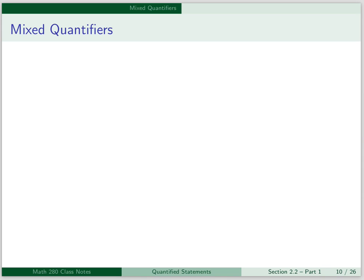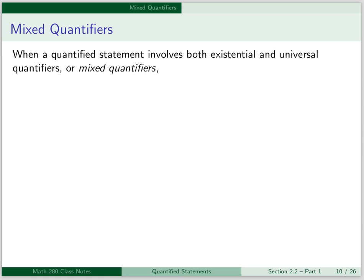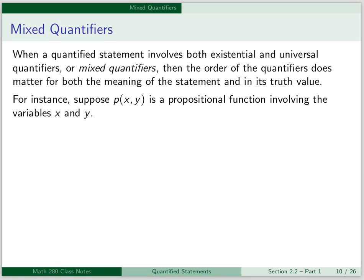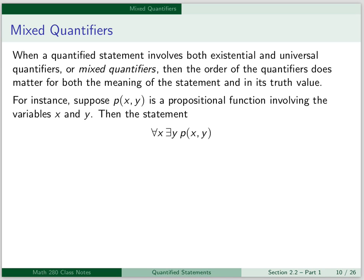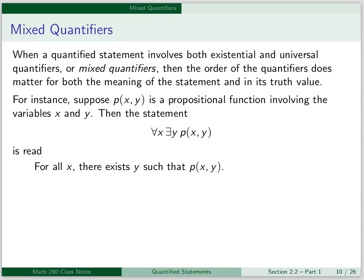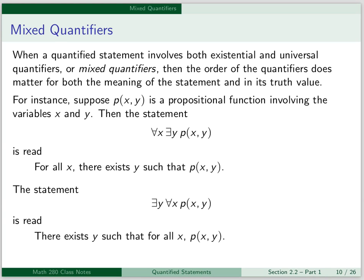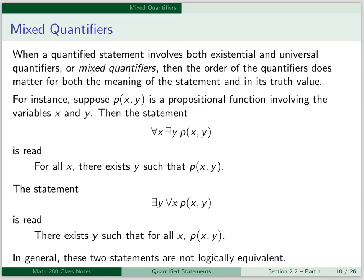Next, we want to talk about mixed quantifiers. When a quantified statement involves both existential and universal quantifiers — mixed quantifiers — then the order of the quantifiers does matter for both the meaning of the statement and its truth value. For instance, suppose p of x, y is a propositional function involving the variables x and y. The statement for all x, there exists a y, such that p of x, y, is read as shown. The statement there exists a y, such that for all x, p of x, y, is read as shown. In general, these two statements are not logically equivalent.